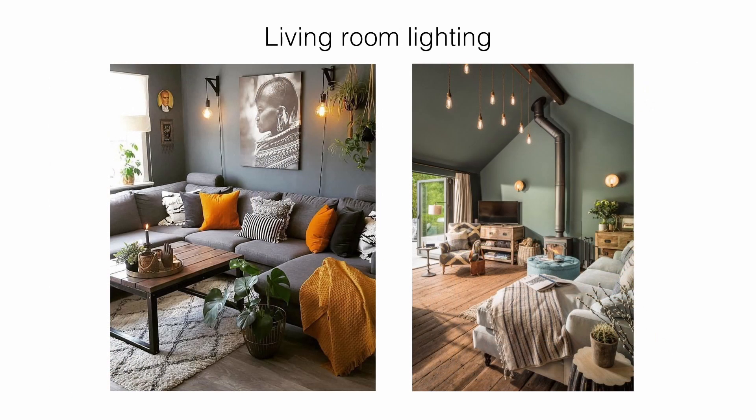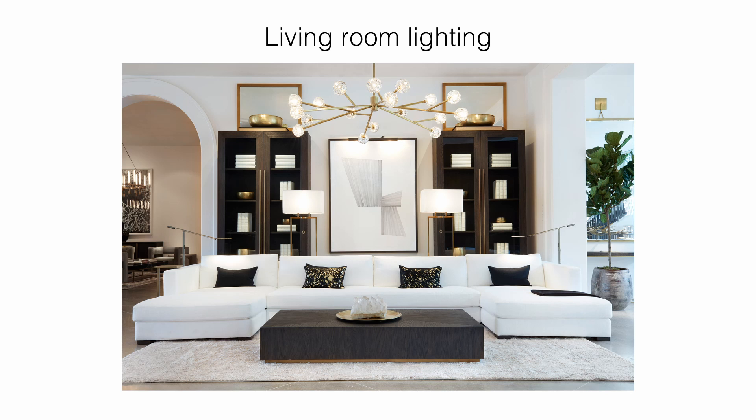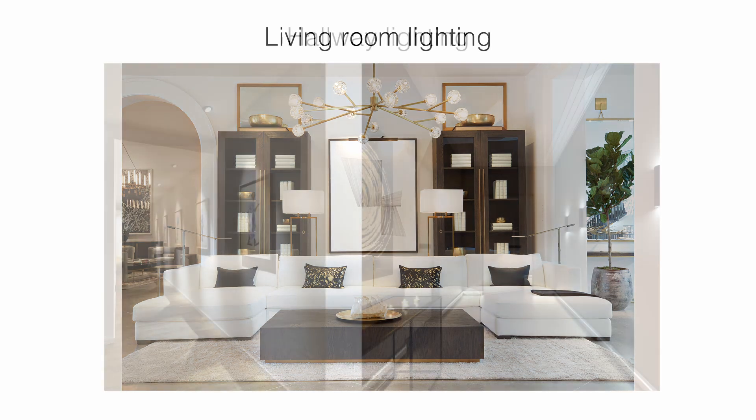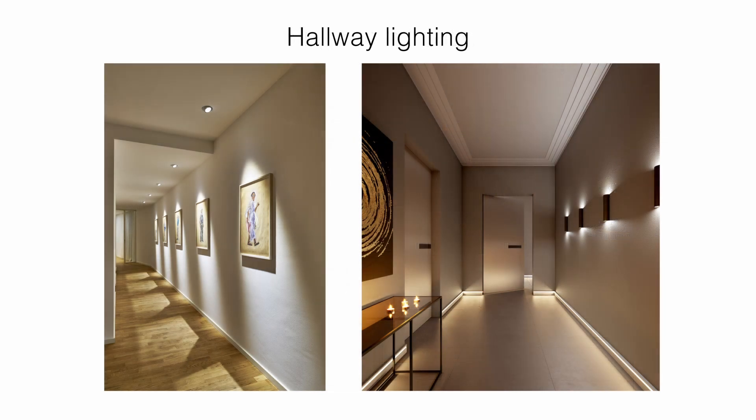Living room: living rooms are an ideal area to layer general, accent, or task lighting. Pair a big light fixture or a flush mount with some lamps for a classic look, add a large chandelier to make a statement, or go more subtle with recessed lights — or pair both together for a dazzling atmosphere. Highlight art pieces, photographs, or your favorite chair with accent lighting, or create the perfect nook with task lights.